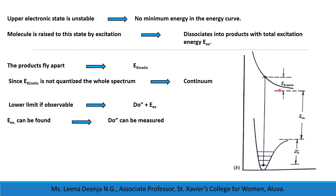In Figure B, the upper electronic energy state is unstable — there is no minimum in the energy curve. As soon as a molecule is raised from the lower energy level to the upper energy level by excitation, the molecule dissociates into products with total excitation energy E_EX. The products fly apart with kinetic energy E_kinetic. Since E_kinetic is not quantized, the whole spectrum exhibits a continuum. The lower limit of the continuum, if observable, will precisely equal D₀ double-dash plus E_EX. If E_EX can be found from knowledge of the dissociation products, D₀ double-dash can be measured with great accuracy.